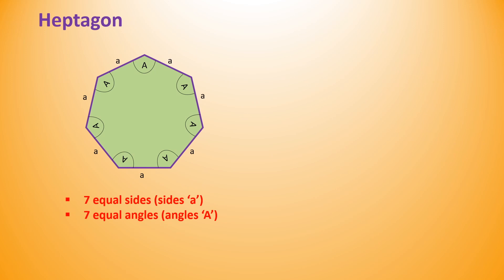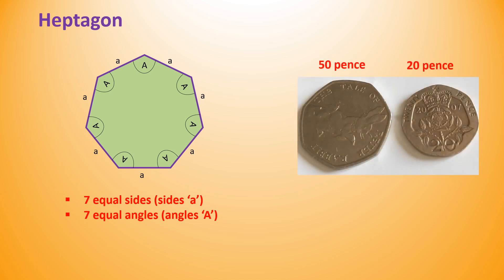Heptagon has seven equal sides and seven equal angles. This heptagon shape we can observe in 50p and 20p coins.